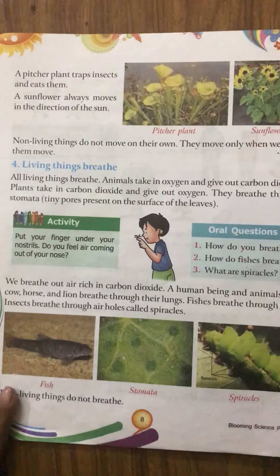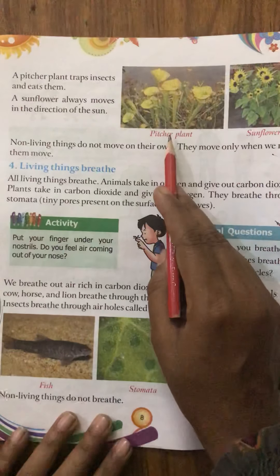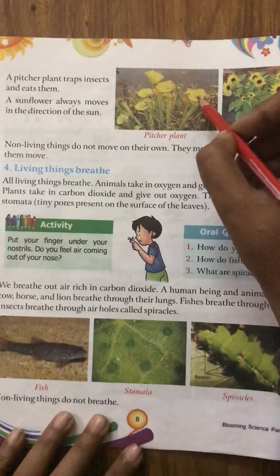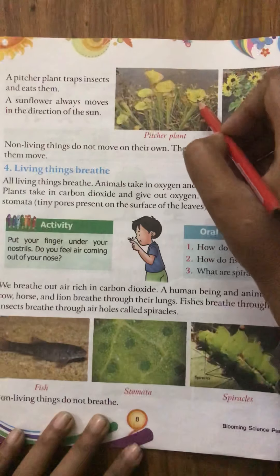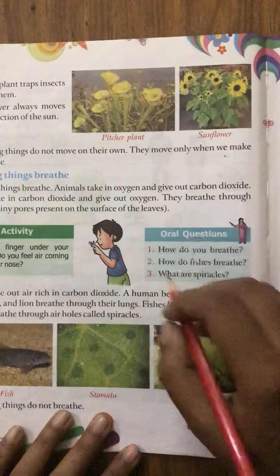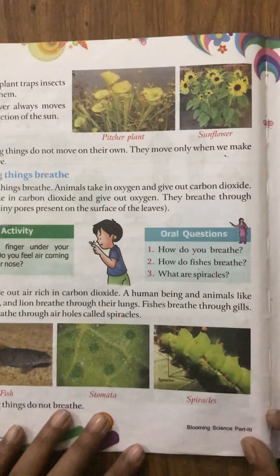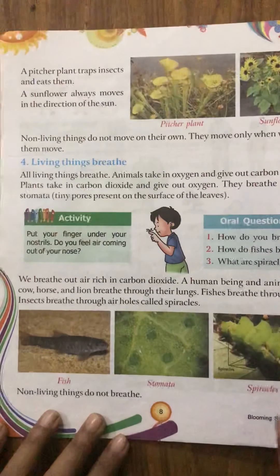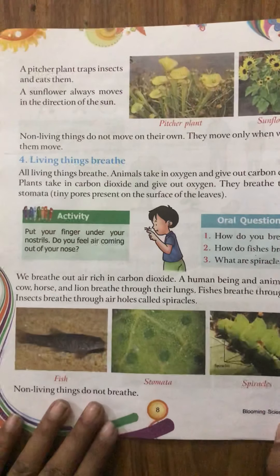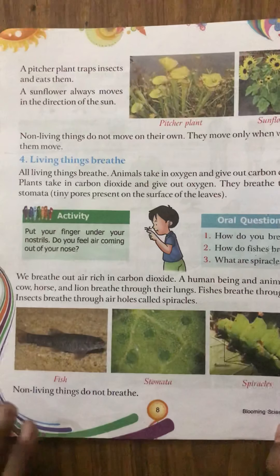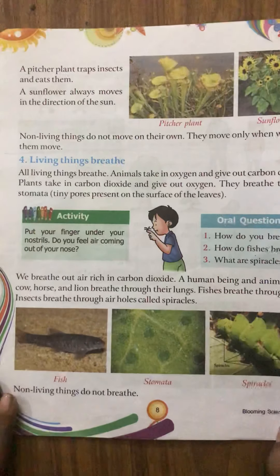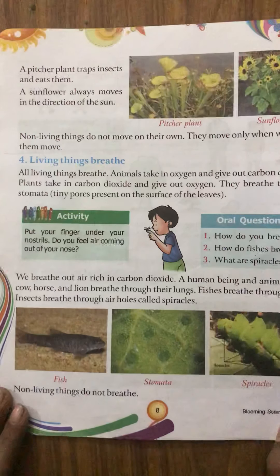This is a pitcher plant — it traps insects and eats them. When an insect sits on it, it traps inside and the plant eats the insect. A sunflower always moves in the direction of the sun. Non-living things do not move on their own — a chair, for example, will only move when we move it from one place to another.